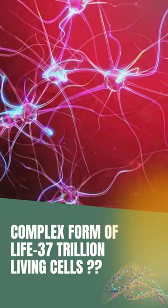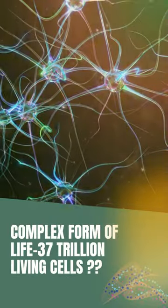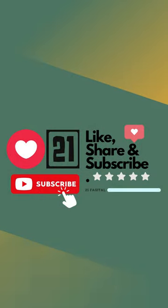How did we evolve into a complex form of life, a colony of over 37 trillion living cells? What are the intermediaries? Isn't it fascinating?